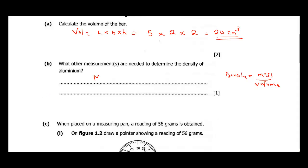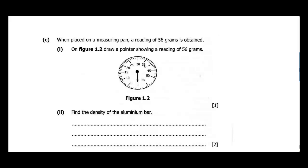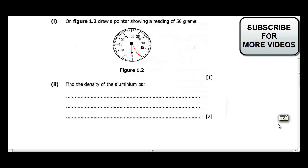Part C says when placed on a measuring pan, a reading of 56 grams is obtained. On figure 1.2, draw a pointer to show a reading of 56 grams. If you watch, this point is zero, this is 5, this is 10, this is 15, 20, and so on to 55. Now 56 is going to be here. This is where my pointer will point. That's 56 grams.